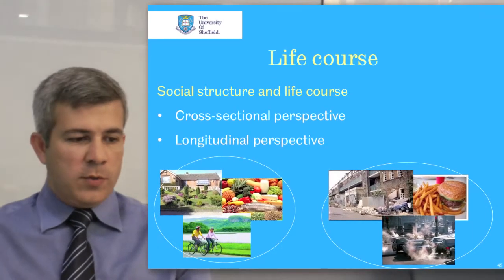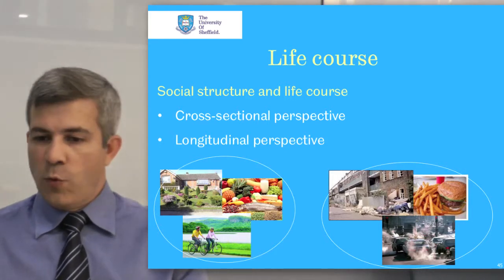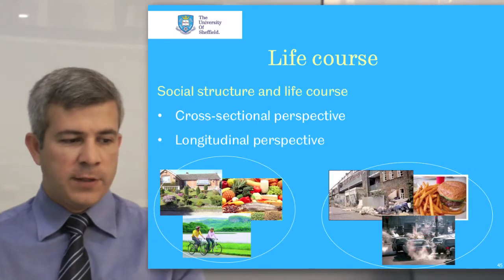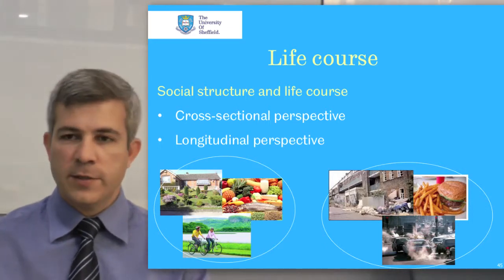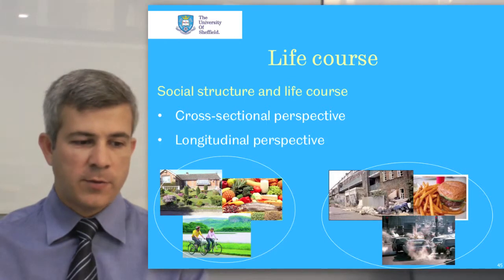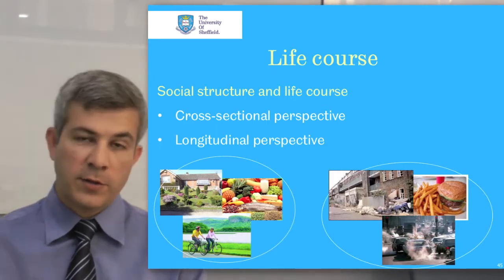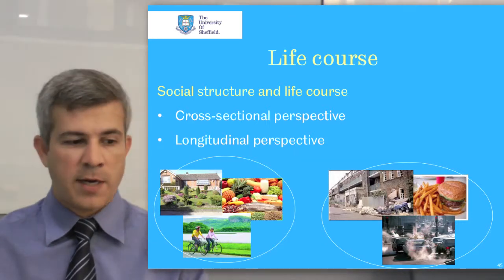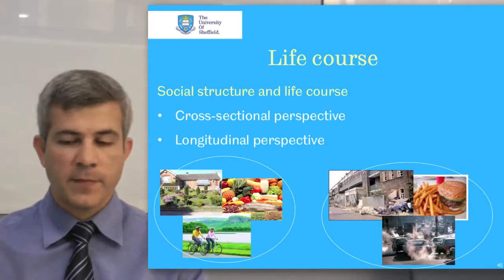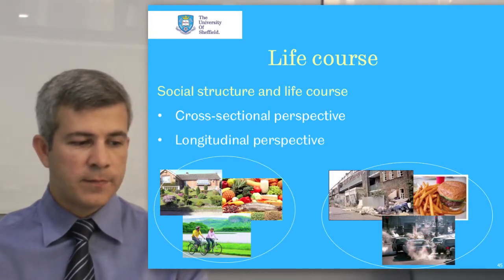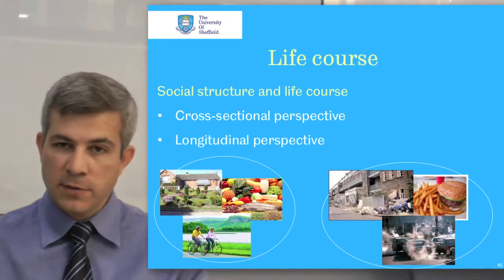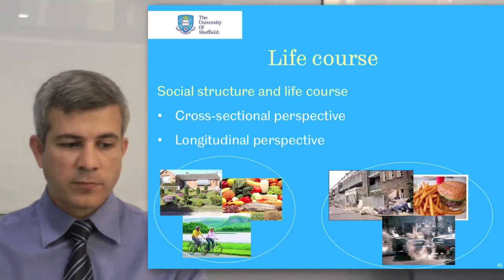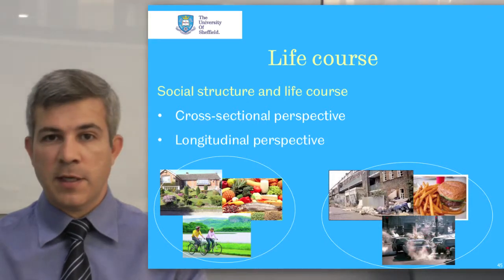Individual biological development takes place within a social context which structures life chances so that advantages and disadvantages tend to cluster cross-sectionally and accumulate longitudinally. Exposure to an environmental hazard is likely to be combined with other hazards, and these exposures are likely to accumulate over the course of life. A person whose working environment is free of hazards is likely to reside in good quality housing, live in an area with little air pollution, have access and leisure time to exercise, and have income that permits a healthy diet.